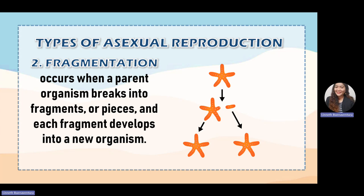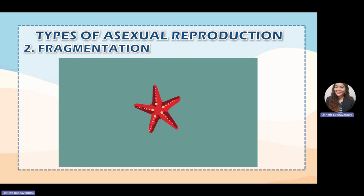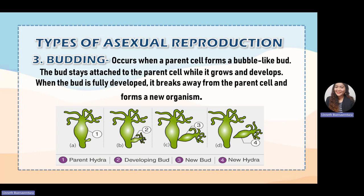The second type is fragmentation. This process is different from fission because parts of the parent organism are used to create a new organism. Fragmentation occurs when a parent breaks into fragments or pieces, and those fragments develop into a new organism. As seen in the video clip, when a starfish is split into different pieces, each fragment develops into a new organism — because each arm of the starfish is capable of producing new cells to form its own body.